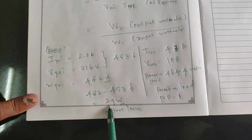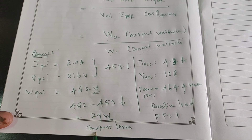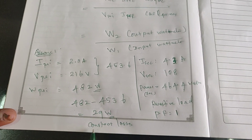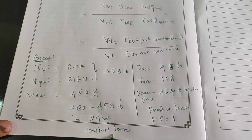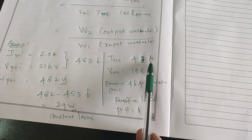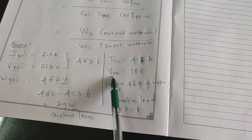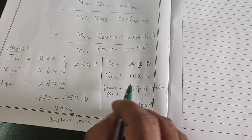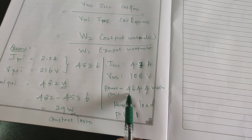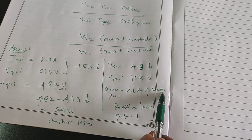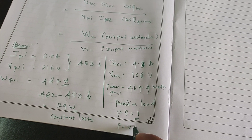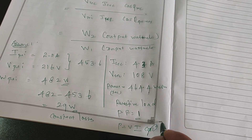The change of 29 watts indicates losses. On the input side, this amount of power is consumed for constant losses — I can say these are the iron losses. Similarly, on the secondary side, 4.3 amperes of current is consumed at the load and voltage is equal to 108 volts. Therefore, the power calculated is 108 × 4.3 = 464.4 watts. Since it is a resistive load, the power factor is unity, so power = V × I only, because cos θ = 1.